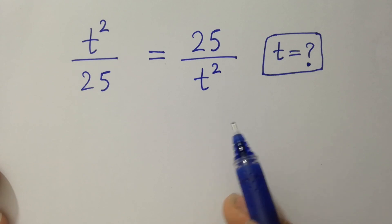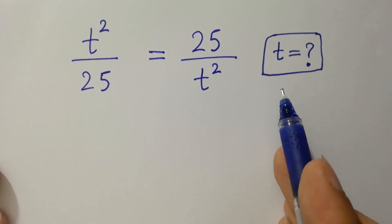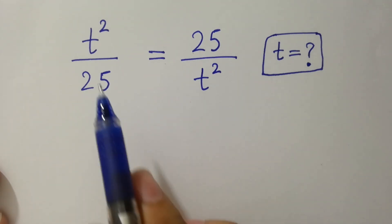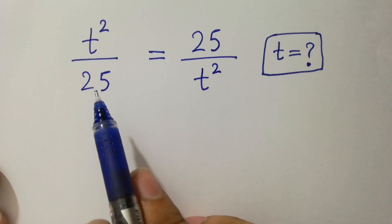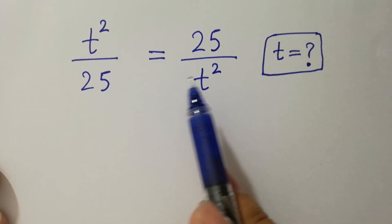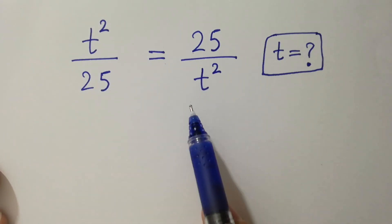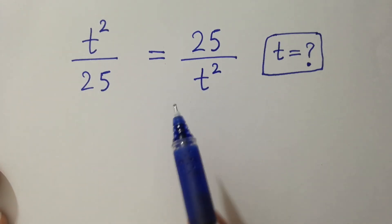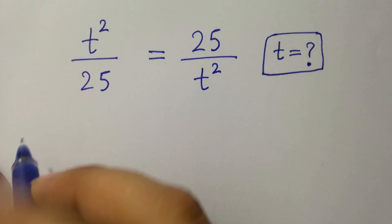Hello friends. Find the value of t if t squared over 25 equals 25 over t squared. Let's have a solution.